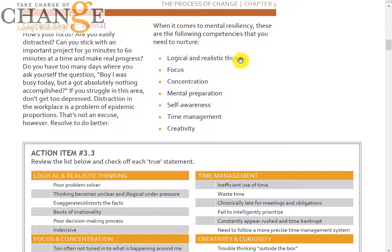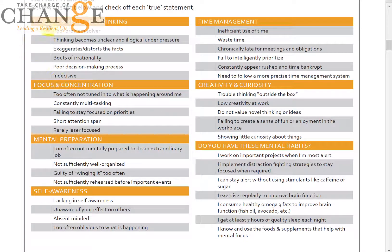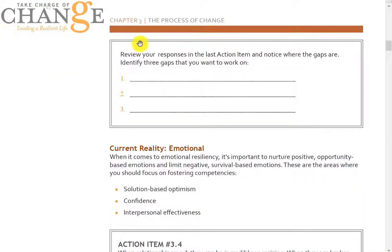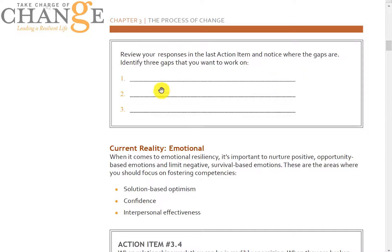The next area is current reality around mental resilience, which ties into logical and realistic thinking, focus, concentration, mental preparation, self-awareness, time management, and creativity. If you go through this self-assessment, there are questions in each of these areas that will give you clues as to whether you've got some gaps. To the extent that you're unable to access your cognition and your creativity, that really puts a damper on your professional success. Once you go through that exercise, write down the three major gaps that came across to you.